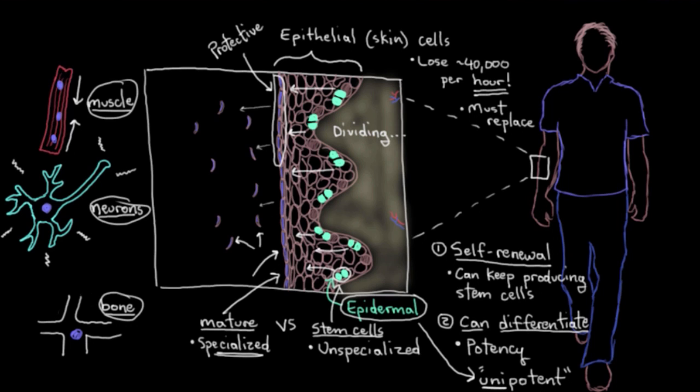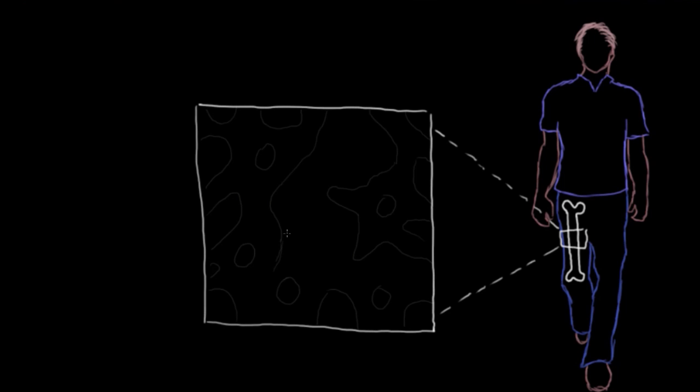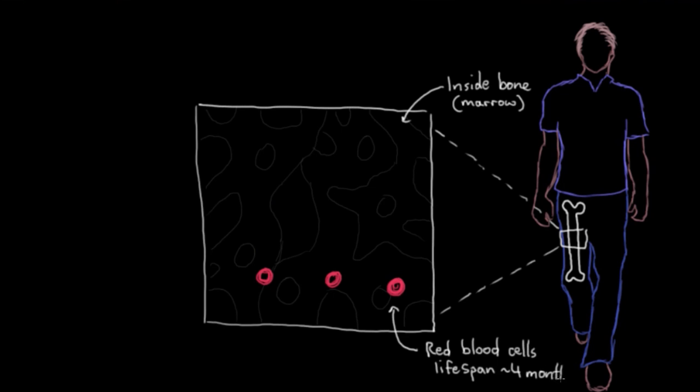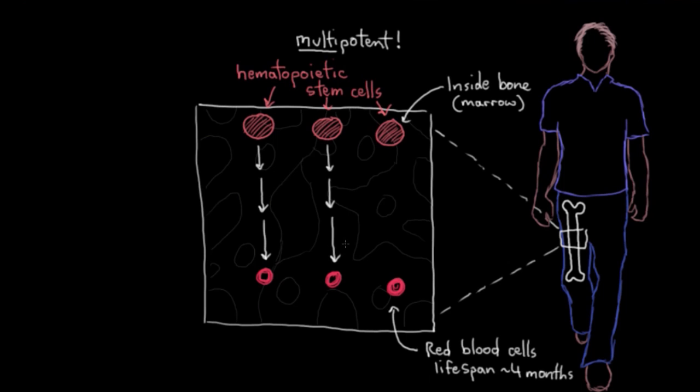But let me show you another example here of a multipotent stem cell. Let's look at this guy's femur, his thigh bone, which is where our blood cells are made, inside a bone marrow in our bones. So you might know that our red blood cells have a lifespan of about four months. So that means that we need to be constantly replacing our red blood cells or we'll run out. Well, in our bone marrow, we have what are called hematopoietic stem cells, which are our blood-making stem cells. And these are pretty special. They're multipotent stem cells, which means they can give rise to many types of cells, but only ones within a specific family. In this case, blood cells and not, for example, cells of the nervous system or the skeletal system. So our hematopoietic stem cells are always busy churning out new blood cells. Red blood cells to carry oxygen for us and white blood cells to keep our immune system nice and strong.